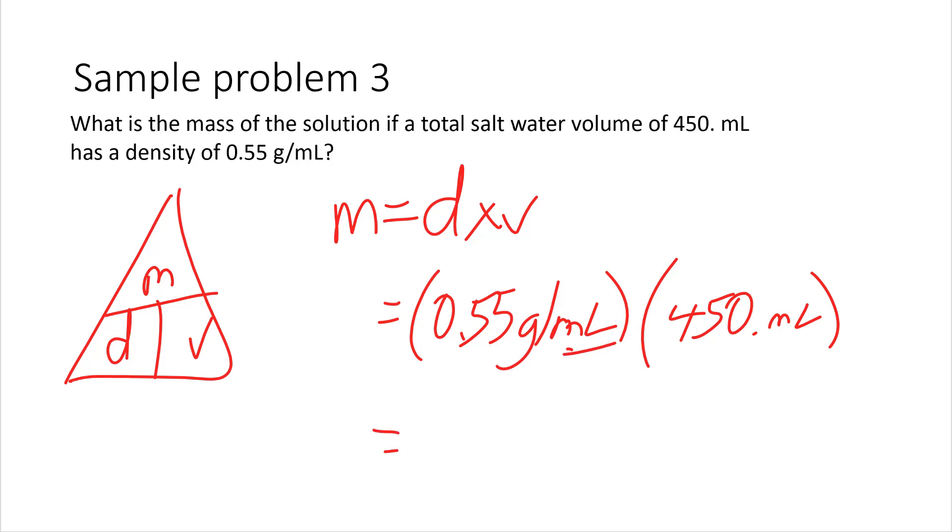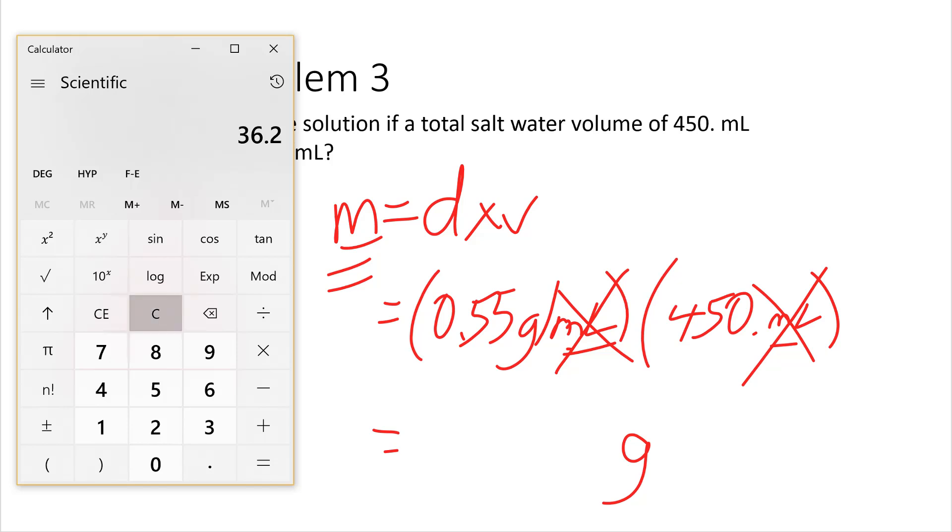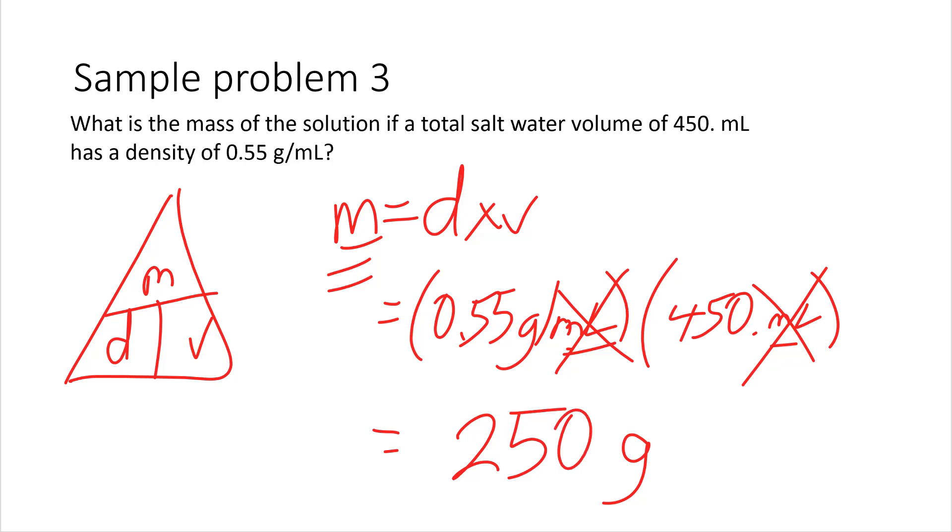Now, all we do is plug it in. Notice the milliliters is on the bottom of the fraction here, on the top of the fraction there, so they cancel out. So, we're going to get grams as our answer, which makes sense because we're solving for mass. So, it's 0.55 times 450, and the mass is 247.5. We notice there's two digits on the left and three digits on the right, so the answer is two digits, so the answer is 250 with rounding. 250 grams is the mass of the solution.